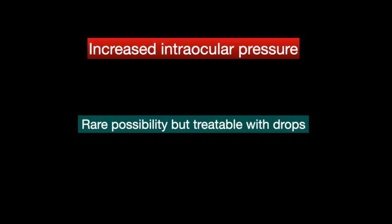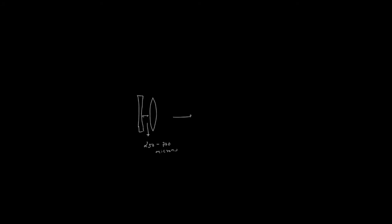Raised intraocular pressure is a possibility after an ICL, and patients might have to use some medications to control eye pressure — this occurs in a small percentage of patients. To understand this, the ICL sits in front of the natural lens, and the distance between the two is called the vault. Normally the vault distance is between 250 to 750 microns. If the vault distance exceeds 1000 microns, the chances of increased eye pressure rise.